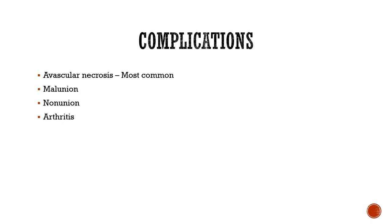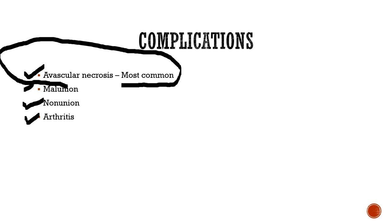Complications include avascular necrosis, malunion, non-union, or subtalar, tibiotalar, or talonavicular arthritis. The most common complication is avascular necrosis, because 60% of the talus is covered by articular surface, leaving very limited scope for blood supply. All blood supply runs from distal to proximal direction, making the talus more prone to avascular necrosis.